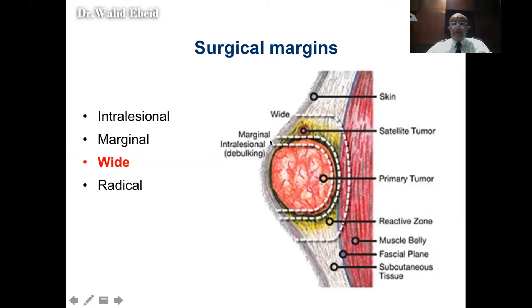If you remove the tumor by passing through the pseudo-capsule, you remove it in total but micrometastases will be left behind — this is also suitable for benign tumors but not malignant ones. If you go through normal tissue, removing the tumor with a cuff of normal tissue, this is called a wide margin. Removing the whole compartment is called a radical margin. The minimum required for malignant bone tumors is a wide margin.